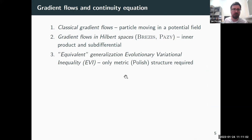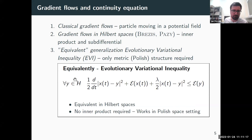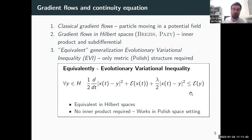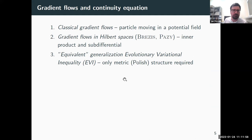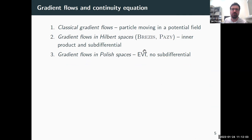This whole idea can be further generalized — what I jokingly call an equivalent generalization. Instead of the inclusion into the sub-differential, we look at this inequality called the evolutionary variational inequality (EVI). On Hilbert spaces, this is equivalent to the sub-differential inclusion. The great advantage is that there is no inner product here, which means this idea can be directly transported to more general settings such as a Polish space setting — and indeed this has been done.